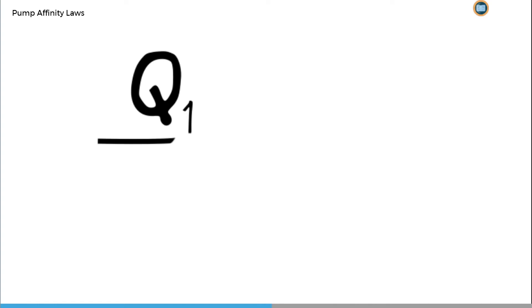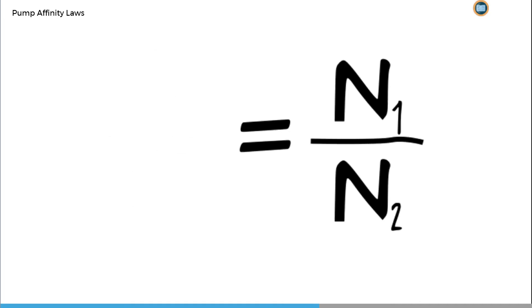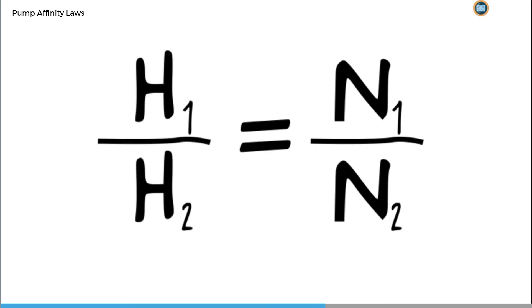This means that for a particular pump, the ratio between two volumetric flow rates, Q1 and Q2, is equal to the ratio of their respective rotational speeds, N1 and N2. Similarly, the ratio between any two values of head developed, H1 and H2, is equal to the ratio of their respective rotational speeds, N1 and N2, squared.